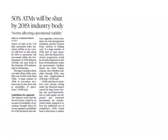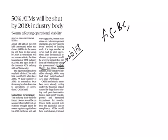The next article is '50 percent of ATMs will be shut by 2019.' From this article, we are going to see the scheme called Pradhan Mantri Jan Dhan Yojana. This comes under GS Paper 2 under Governance and the subtopic of financial inclusion. Financial inclusion means delivery of financial services at an affordable cost to disadvantaged and low-income groups, providing them timely and adequate access to financial products and services like bank accounts, savings products, remittances, and insurance.